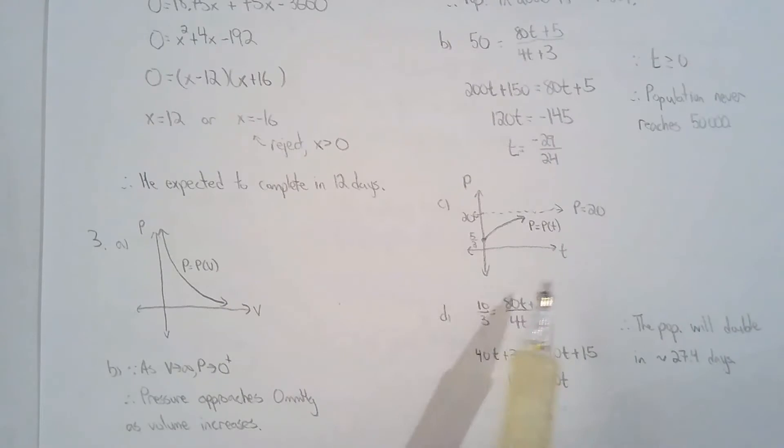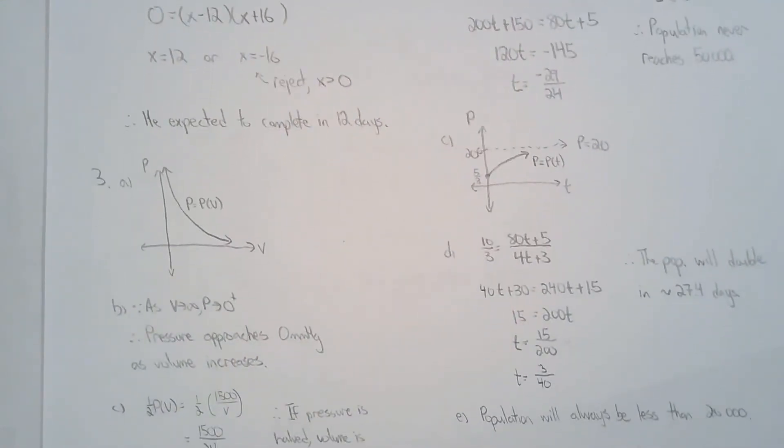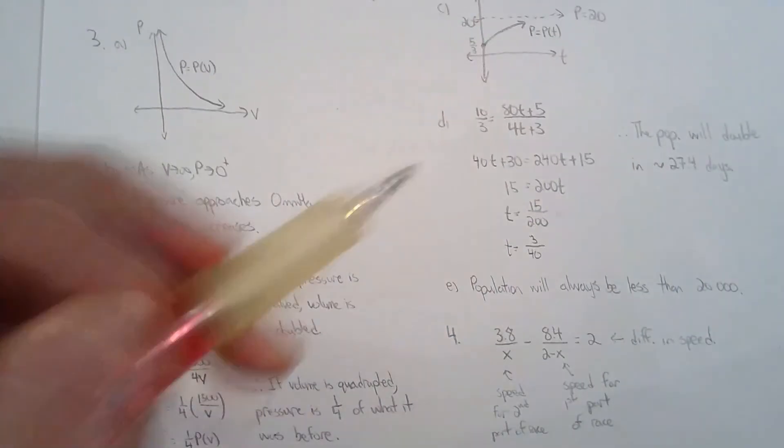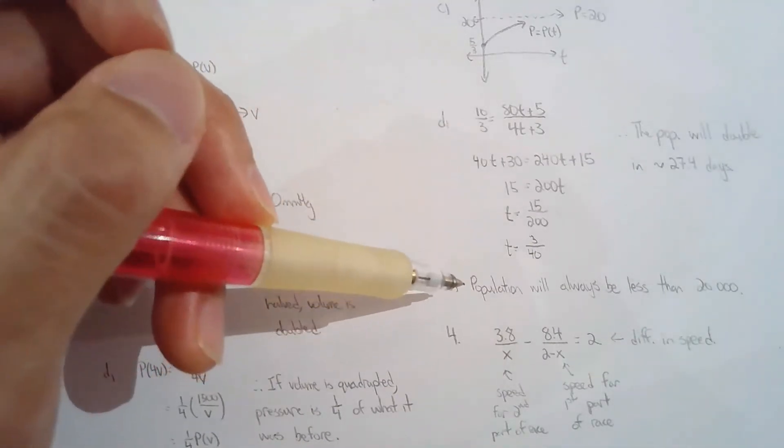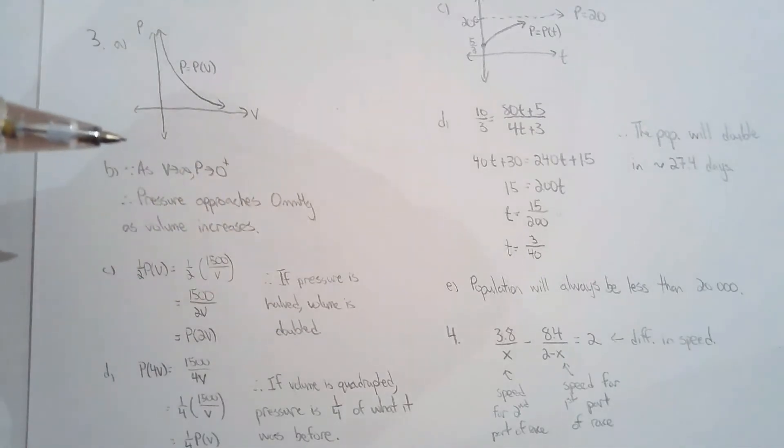Of course you can graph the function—the model that helps you analyze the population. Then they ask you for the time it takes to double the population, so that's basically another solving a rational equation question. They ask what's the significance of the horizontal asymptote, and it simply represents the upper limit to the population.